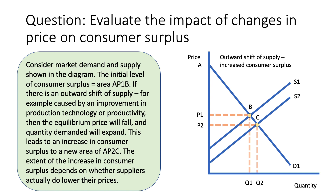equilibrium price will fall from P1 to P2 and quantity demanded will expand from Q1 to Q2. This leads to an increase in consumer surplus — the new area beneath the demand curve and above the price is area P2, A, C, representing an area increase of P1, P2, C, B. The extent of the increase depends on whether suppliers pass on cost improvements as lower prices, or keep the price the same and take a higher margin.